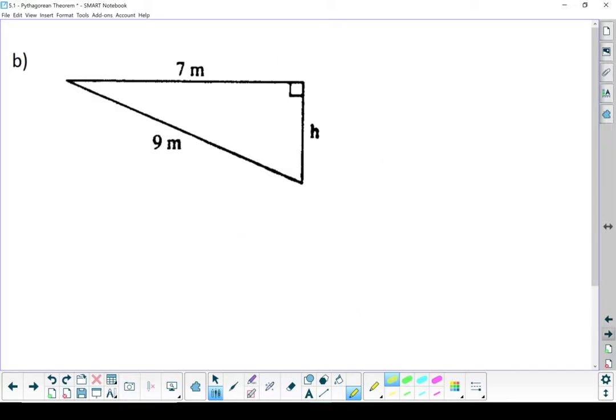Next question. Let's find H. Still going to start by labeling my triangle. That right angle points at 9 meters - that's my longest side. So that must be my hypotenuse. These other two must be my legs. Let's write down our formula.